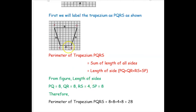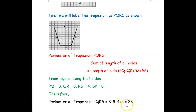The perimeter of trapezium PQRS is 8 plus 8 plus 4 plus 8, which gives a perimeter of 28.